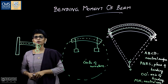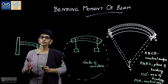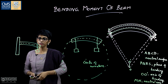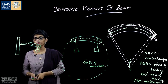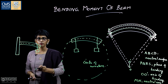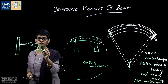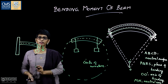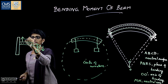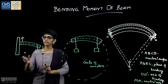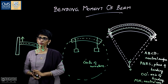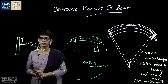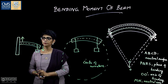Now we are considering the case where we fix one edge and load the free edge. Because of the applied force the beam bends, so there is a force acting downwards and at the fixed end there is a reaction force acting upwards. These two forces are equal and opposite and form a couple called the bending couple. The moment of this couple is called the bending moment.